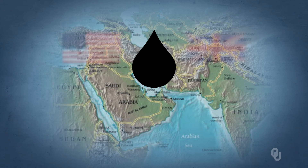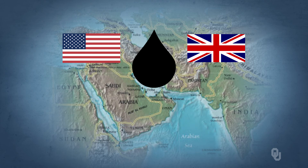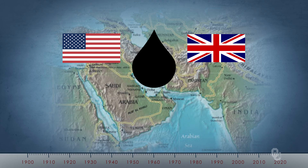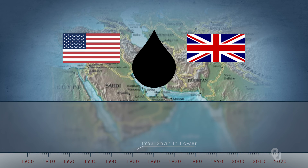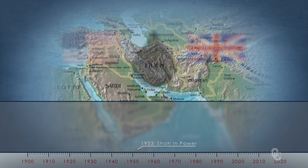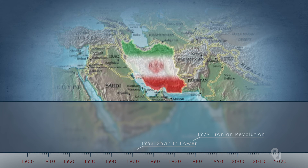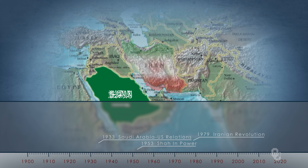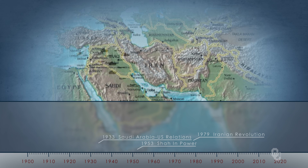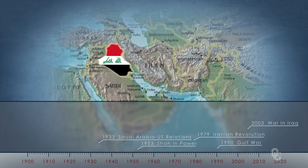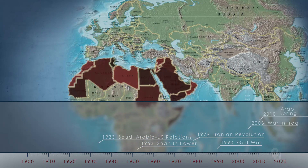In the final section on the Persian Gulf, we begin with oil and a U.S.-British-inspired coup d'etat on Iran in 1953 that brought the Shah of Iran to power. We continue on through the Iranian Revolution, when he was overthrown and the Islamic Republic was established, then the U.S. relationship with Saudi Arabia, the Gulf War, and the invasion of Iraq in 2003. And we'll end with the Arab Spring.